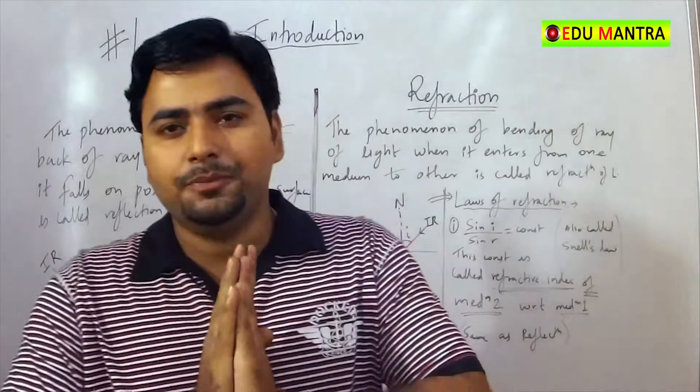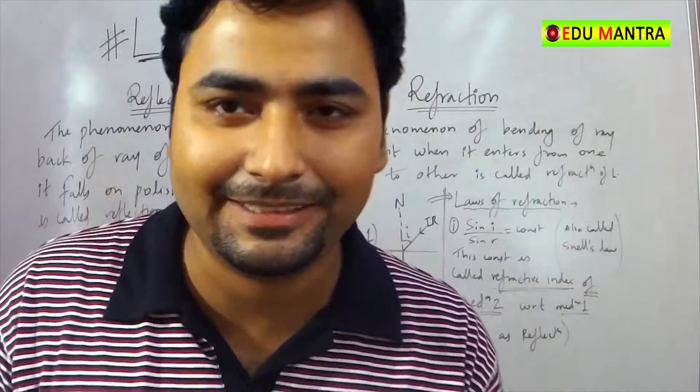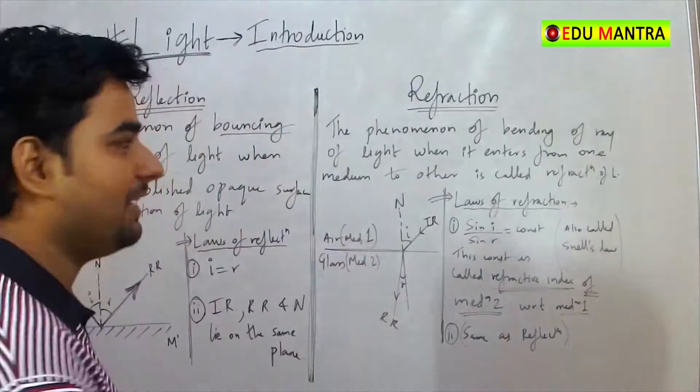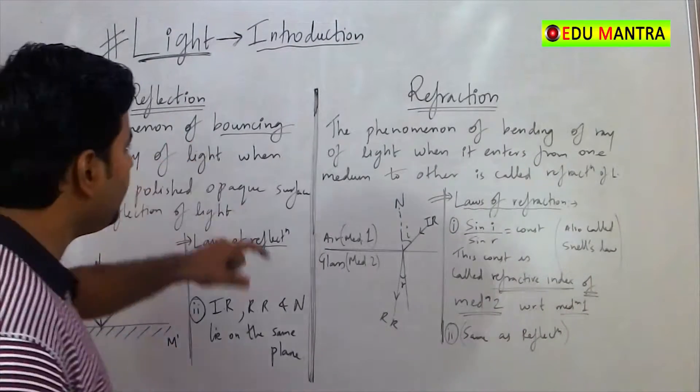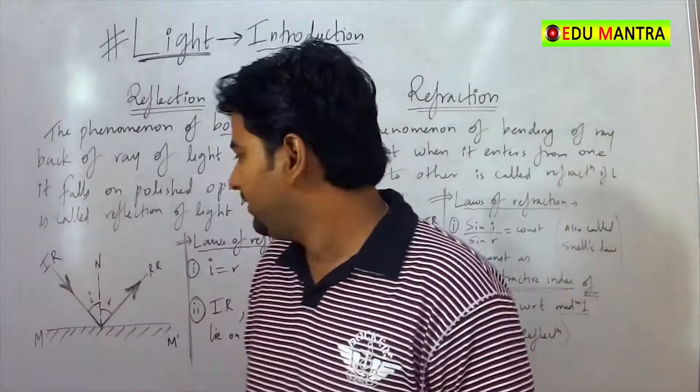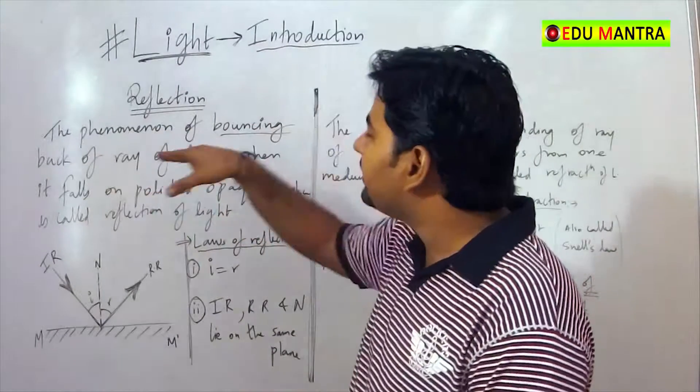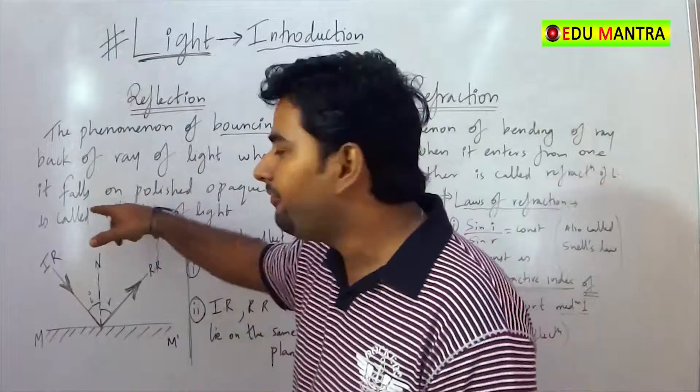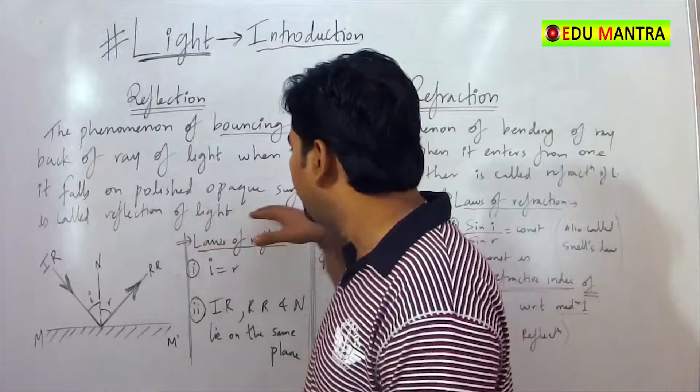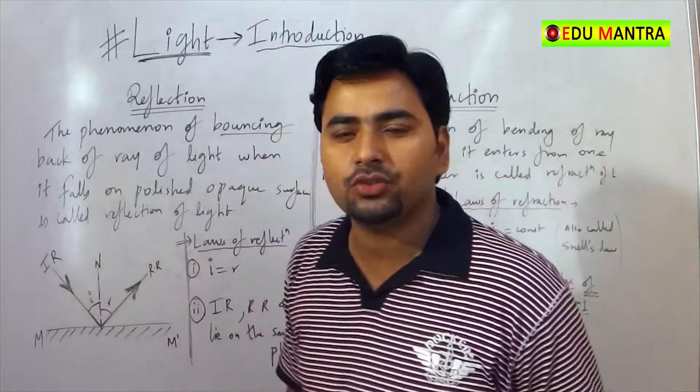The second part: reflection and refraction. What exactly is reflection? The phenomenon of rebouncing of ray of light. The phenomenon of bouncing back of ray of light when it falls on opaque polished surface is called reflection of light.